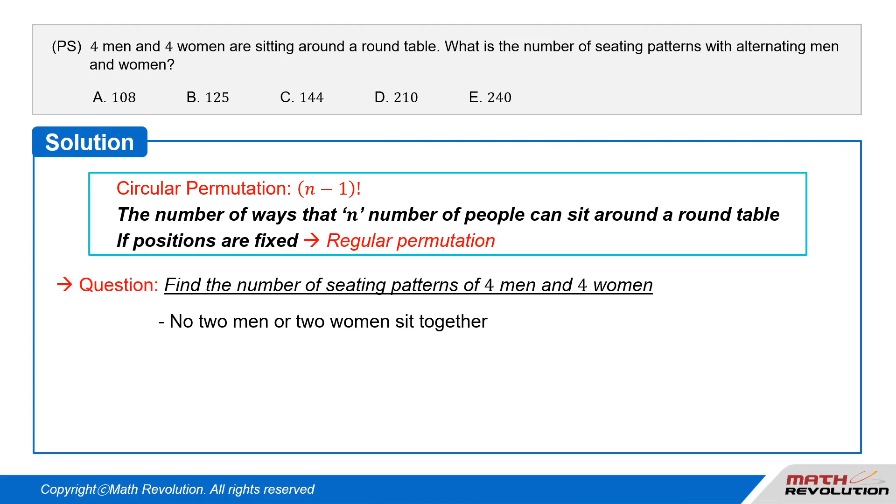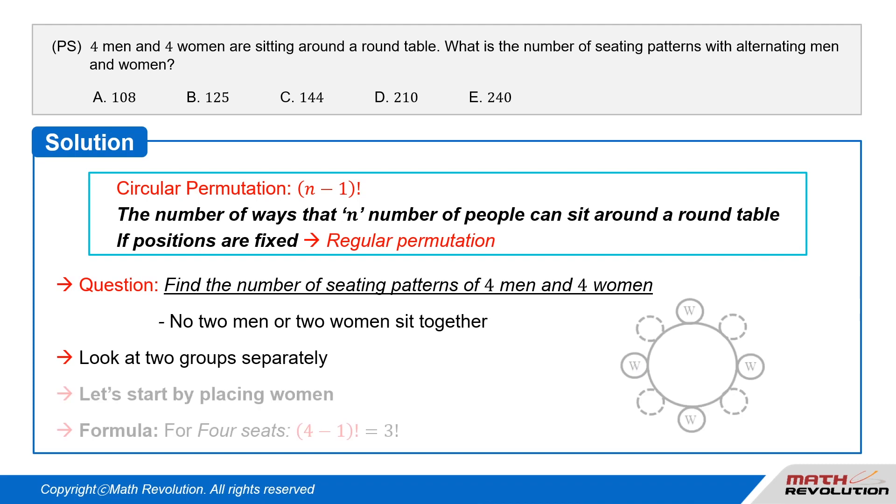We have to find the number of seating patterns of four men and four women such that no two men or two women sit together. The key is to look at the two groups separately. It doesn't actually matter which group you start with, but let's start by placing the women.